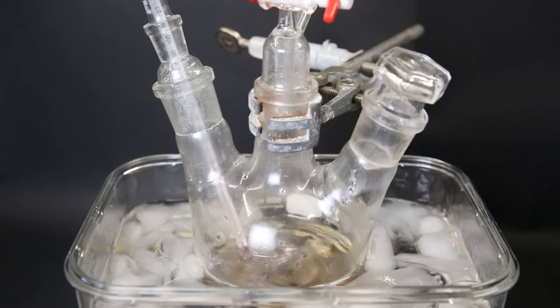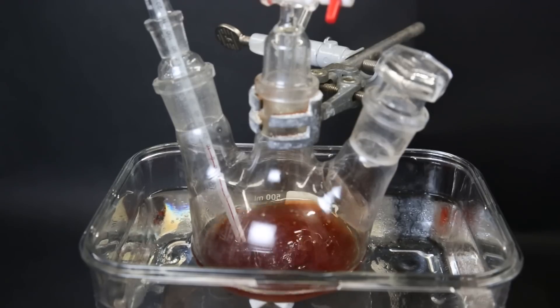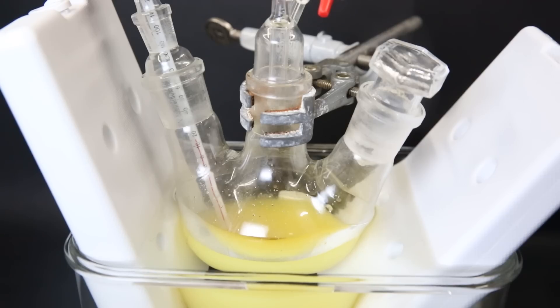For this reaction, it is very important that it is stirring strongly because the acid and the toluene are immiscible. If there is not enough stirring, the reaction will not work. So I slowly add in the acid mixture and also make sure that the temperature doesn't increase too much. During the reaction, the mixture turns red, and when it is finished, it will turn yellow.